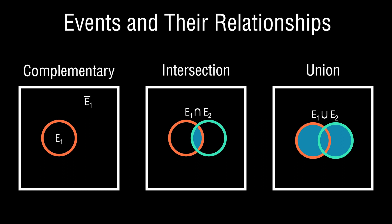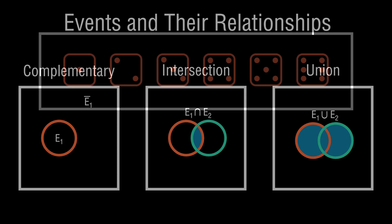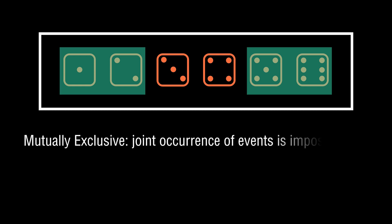With this, you have a good understanding of events and how they relate to each other. In the prior example, I defined the event of a one or two as one event shaded in green, and another event being five or six. If I am rolling a die once, these events can be described as being mutually exclusive — meaning the joint occurrence of these events is impossible.